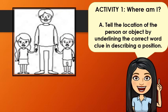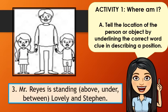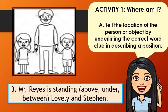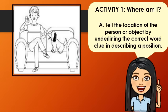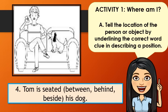Number 3: Tell the location of Mr. Reyes. Mr. Reyes is standing above, under, or between Lovely and Stephen. How about the location of the man? Number 4: Tom is seated between, behind, or beside his dog.